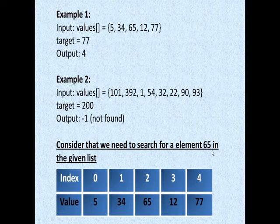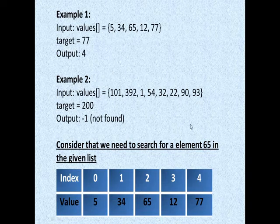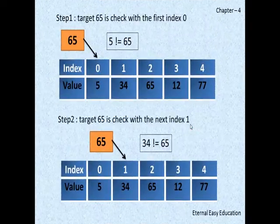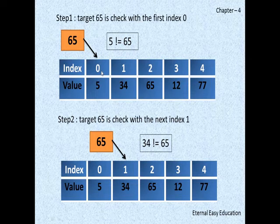Consider that we need to search for element 65 in the given list. We are going to see an example now. So the list is 5, 34, 65, 12, 77. Index value is 0—always the index value starts with 0—0, 1, 2, 3, 4.